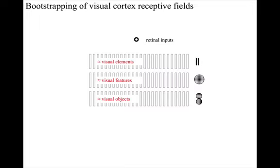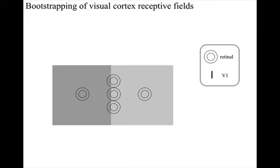As we discussed earlier in the course, the retinal cells detect centre-surround fields, and genetically defined connectivity into cortical area V1 could be established such that receptive fields correspond with boundaries between light and dark.